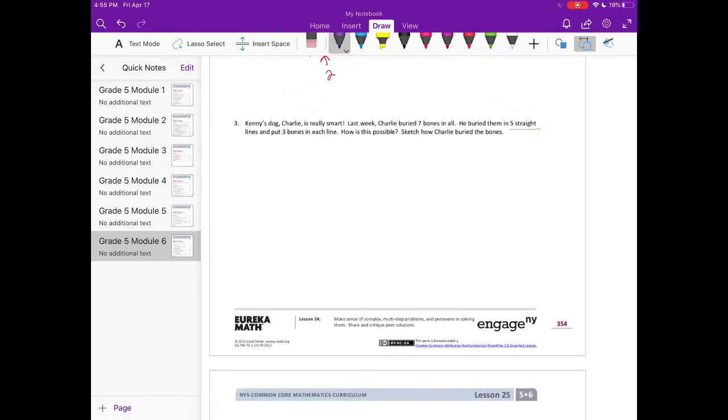Number three: Kenny's dog Charlie is really smart. Last week, Charlie buried seven bones in all. He buried them in five straight lines and put three bones in each line. How is this possible? Sketch how Charlie buried the bones. We need to use seven different bones, arrange them so that we can get five straight lines that have three bones in each of those lines.